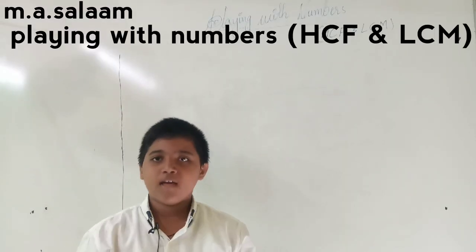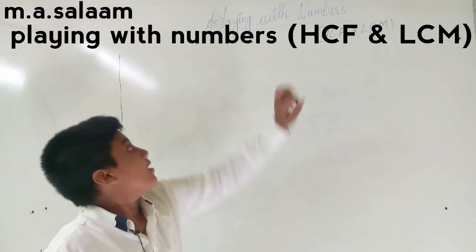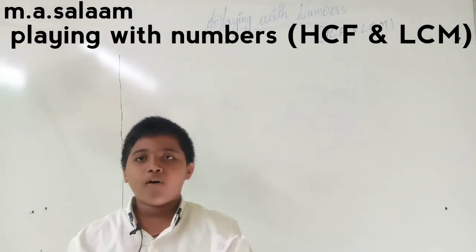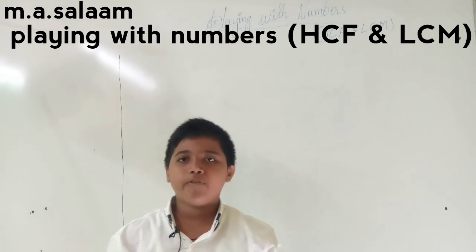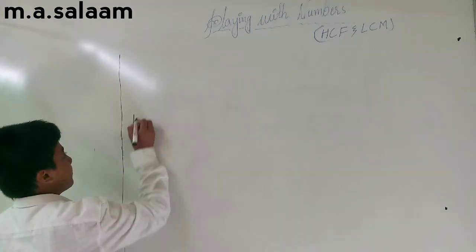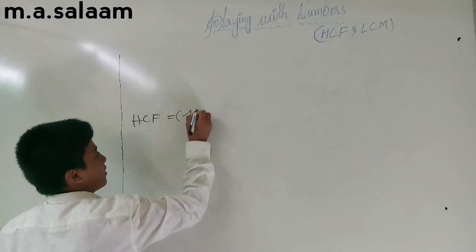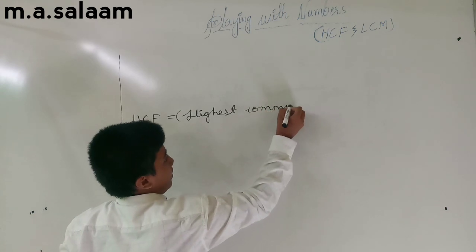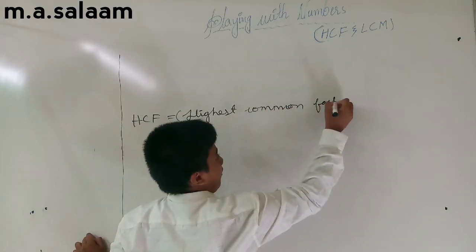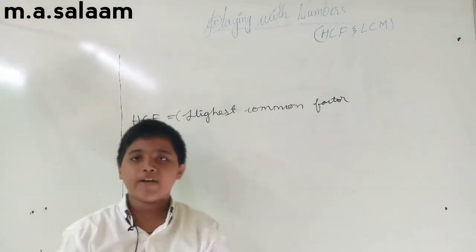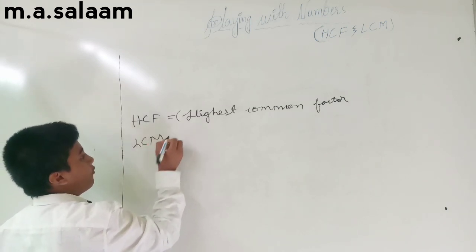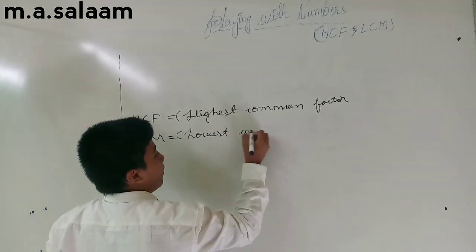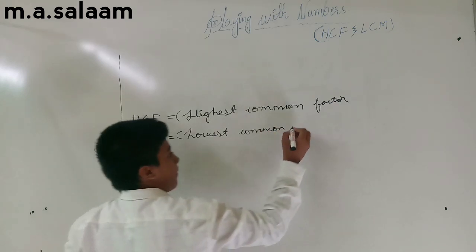Hi, my name is Aimee Salaam and today we are going to learn a new chapter called 'Playing with Numbers.' Our first topic is HCF and LCM. The full form of HCF is Highest Common Factor and the full form of LCM is Lowest Common Multiple.